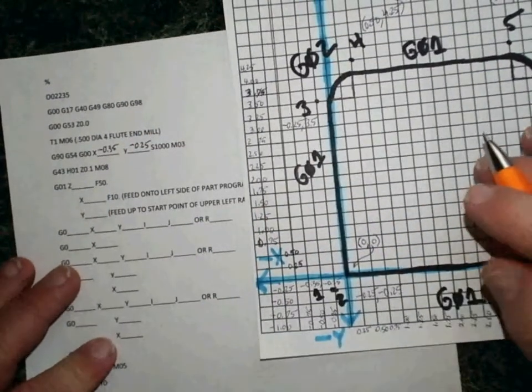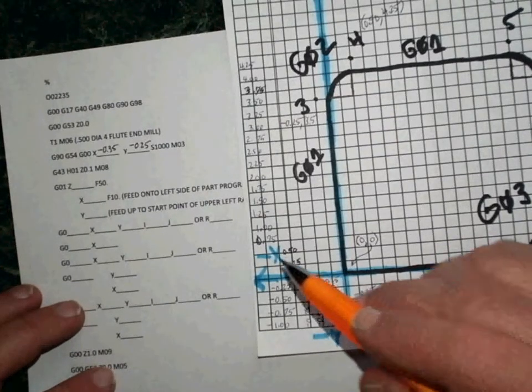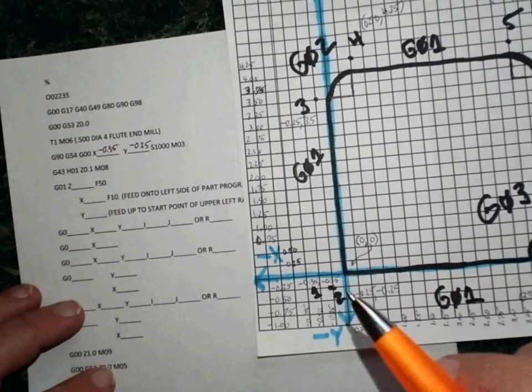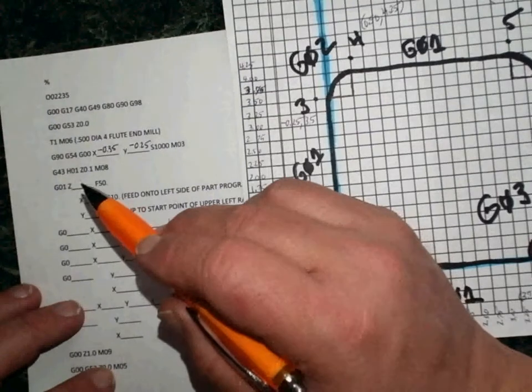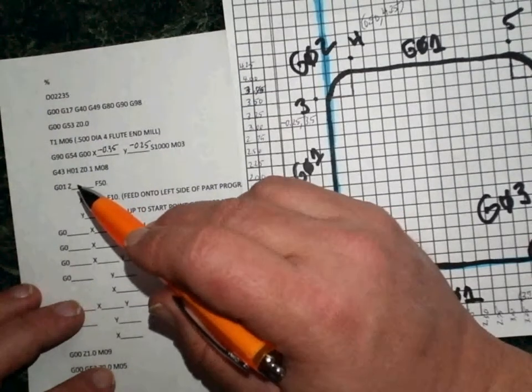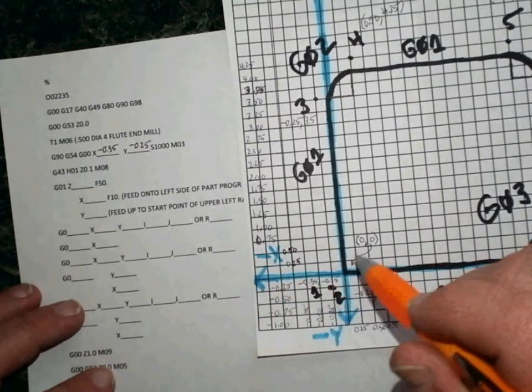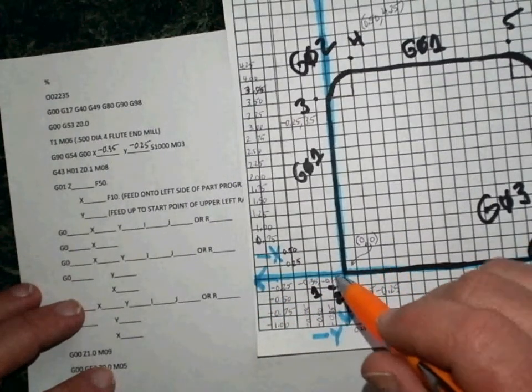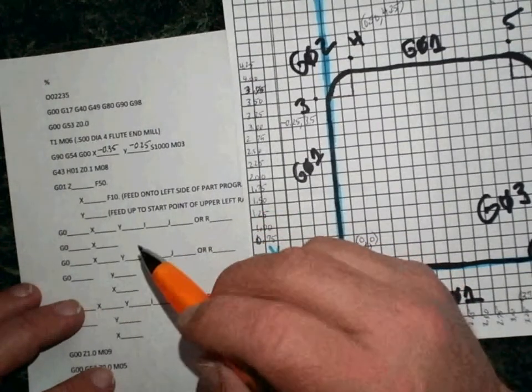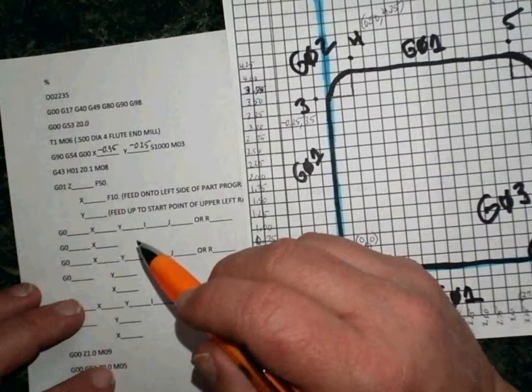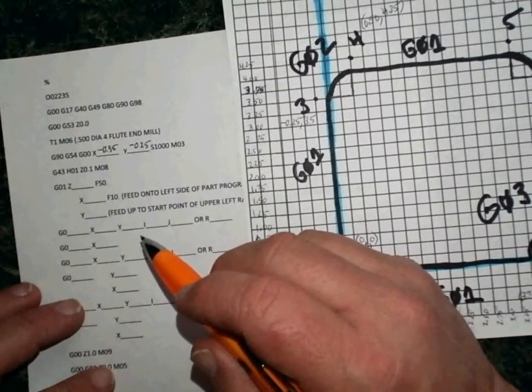Now we're at that location, or at least we're at that location but we're above the work. And in this line of code here, what we're doing is coming down to the proper location with the tool. In other words, we're feeding down into the work and getting ready to cut. So we're at this location, and then we're going to go down with the tool so that we can start cutting.